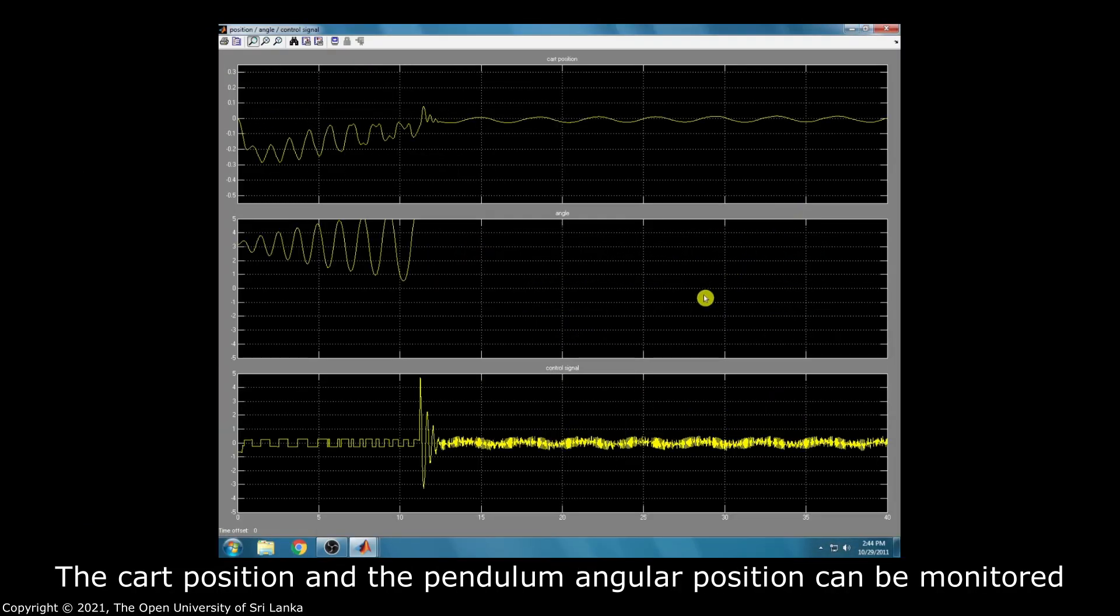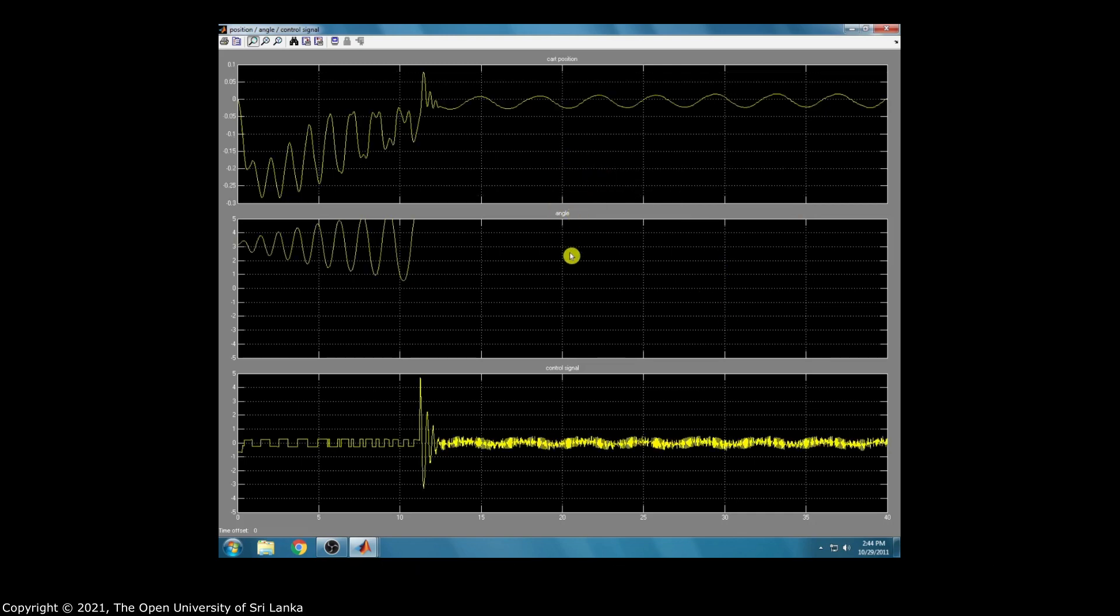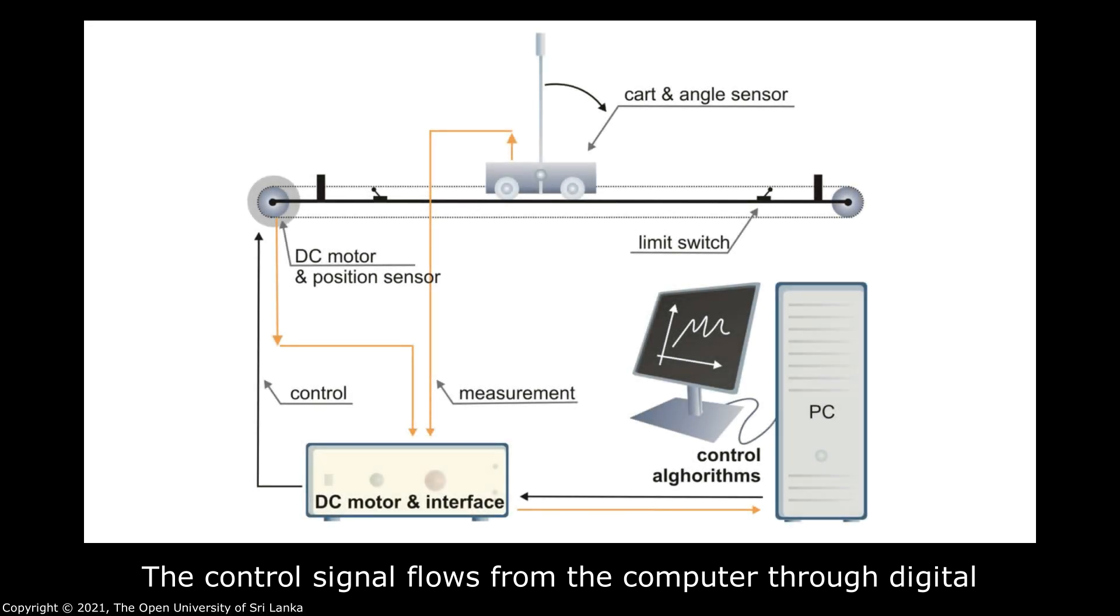The cart position and the pendulum angular position can be monitored by using encoder feedbacks. The control signal flows from the computer through digital to analog converter and to the data acquisition board. The digital analog output is wired to the power amplifier input which drives the DC motor.